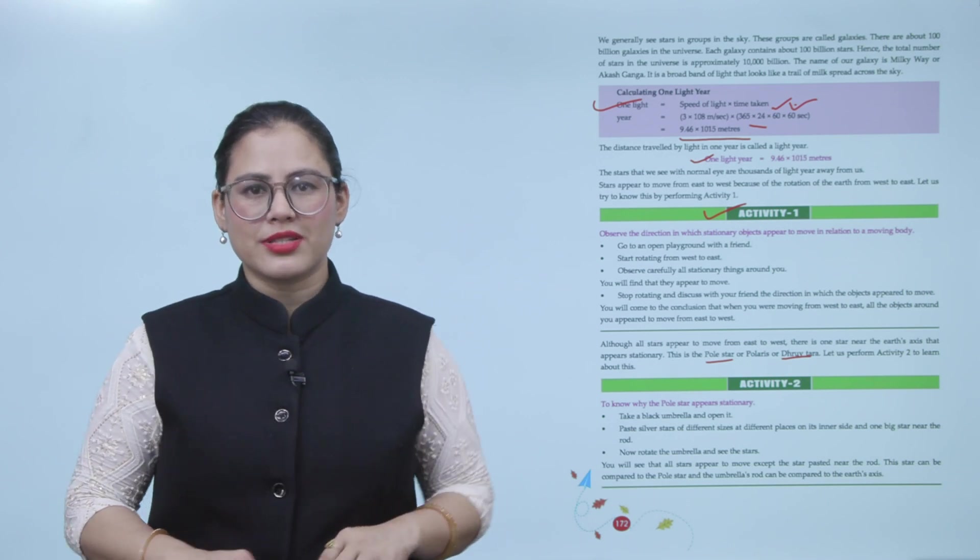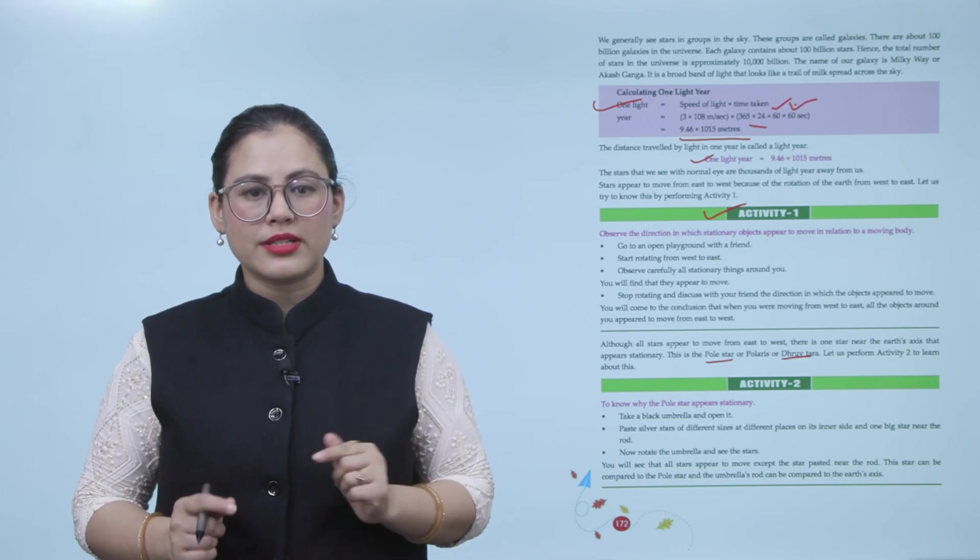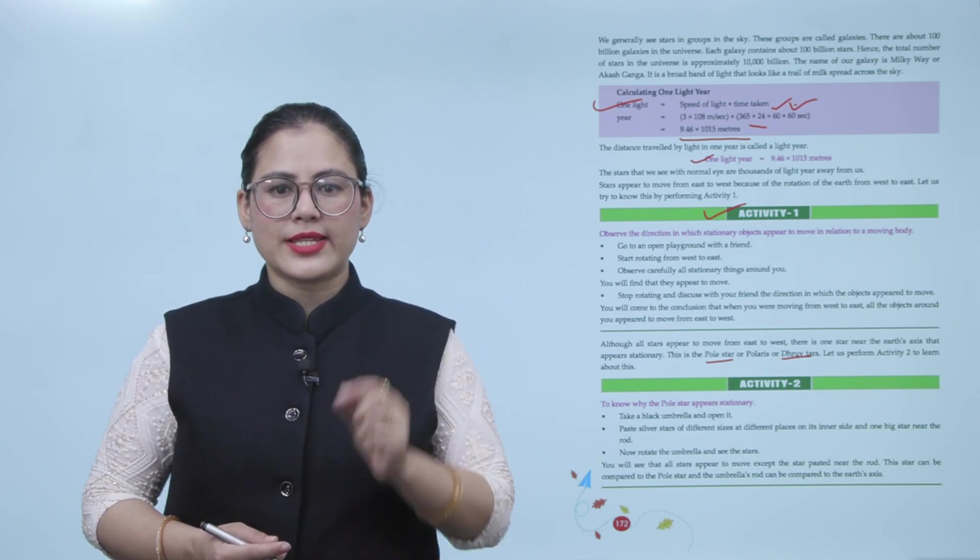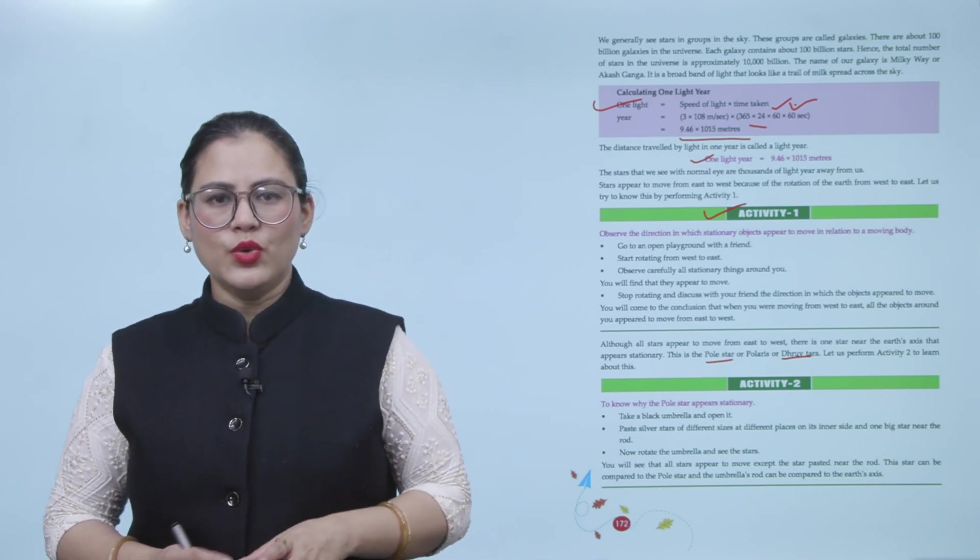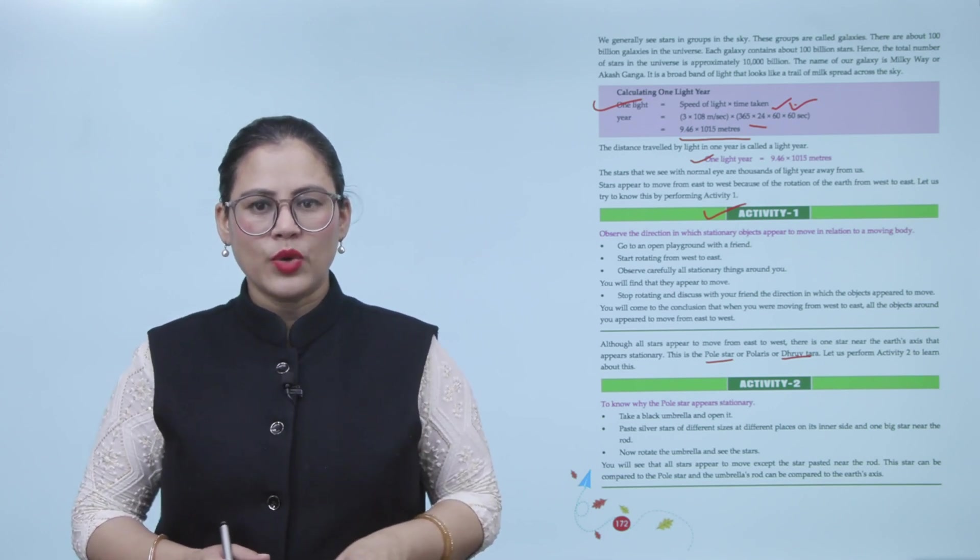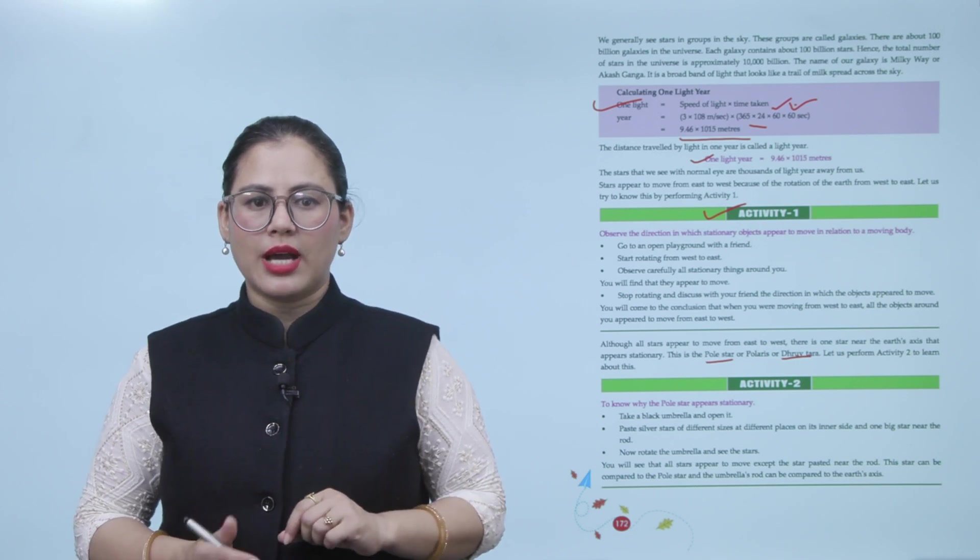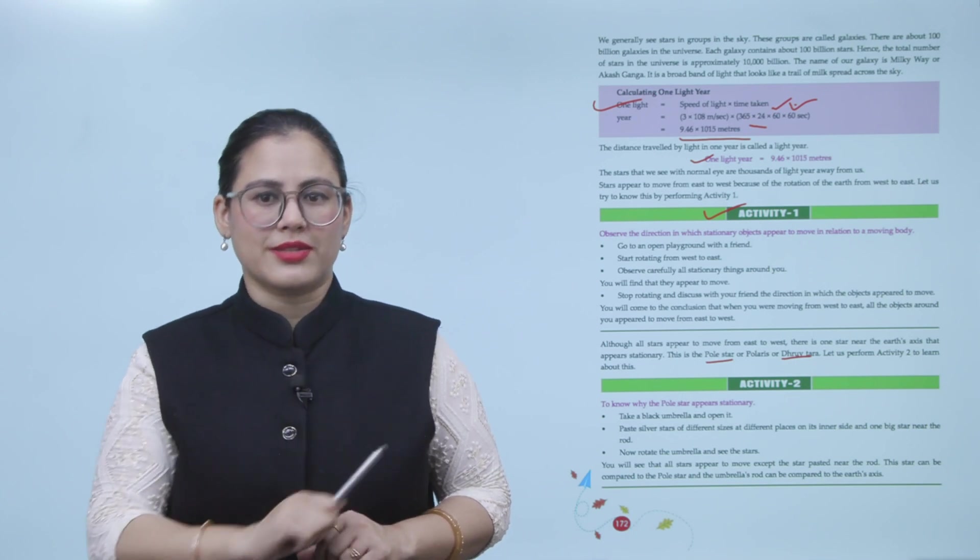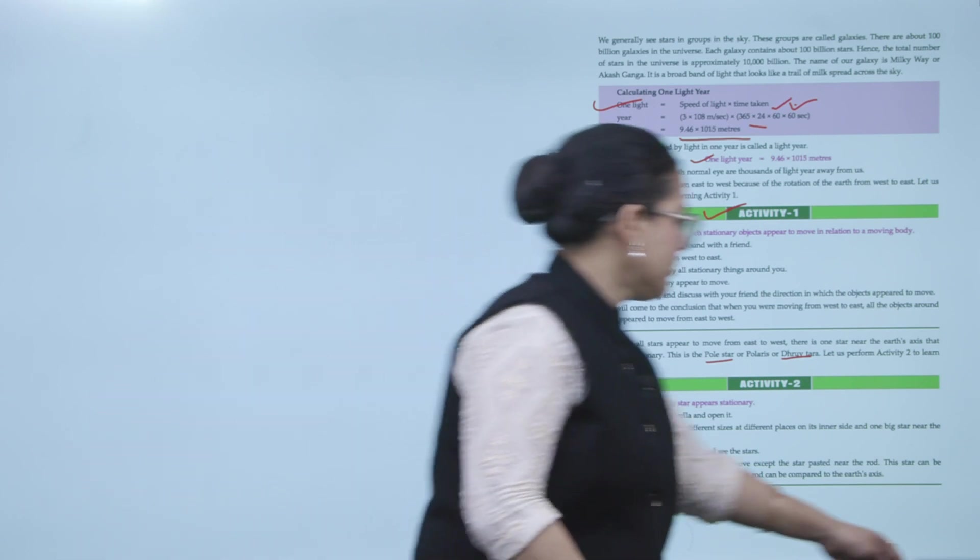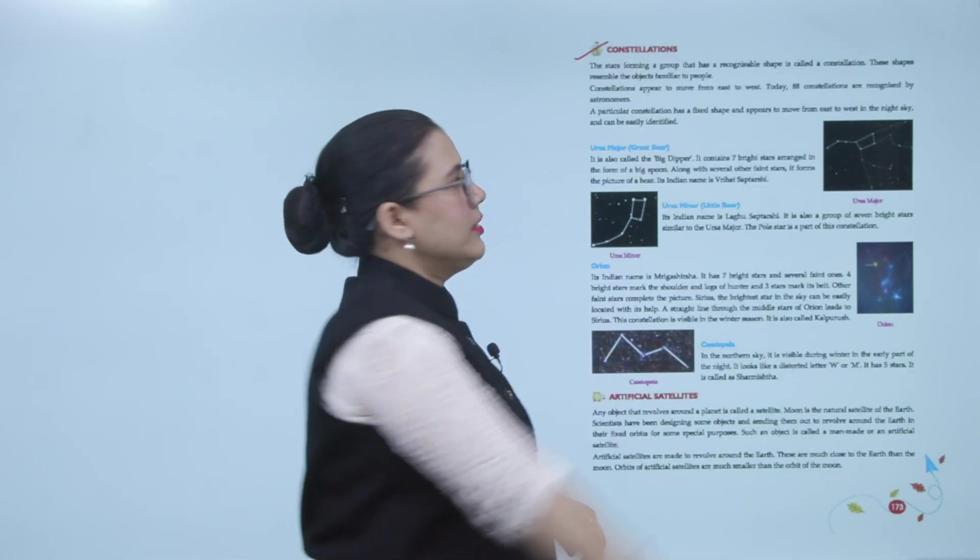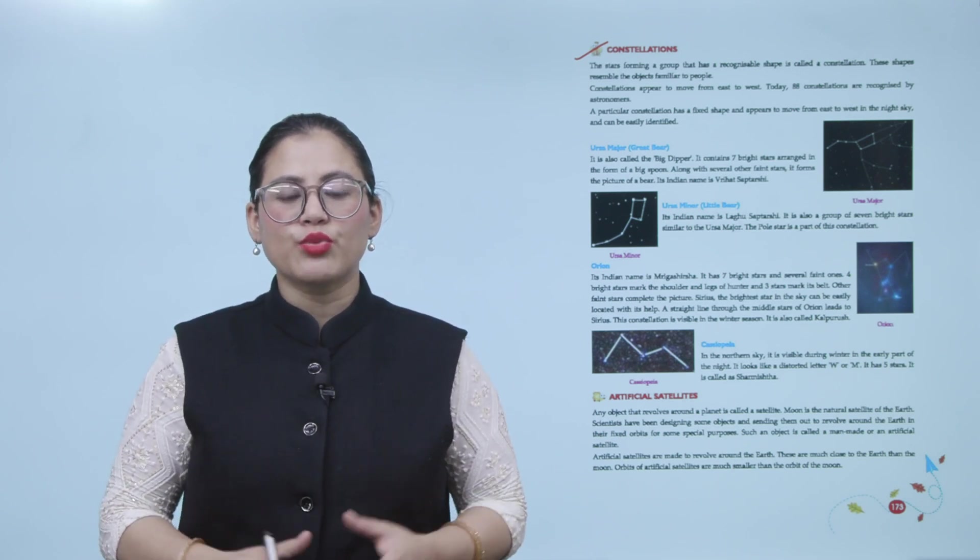Activity two: To know why the pole star appears stationary. Take a black umbrella and open it. Paste silver stars of different sizes at different places on its inner side and one bigger star near the rod. Now rotate the umbrella and see the stars. You will see that all the stars appear to move except the star pasted near the rod. The star can be compared to the pole star, and the umbrella and the rod can be compared to the earth's axis.